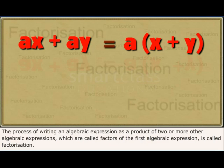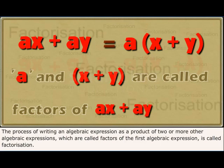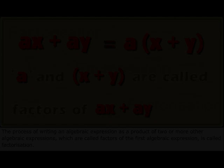So we take out a from both the terms to obtain ax plus ay equals a multiplied by x plus y.